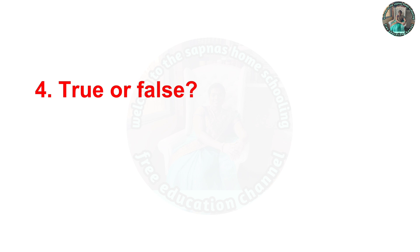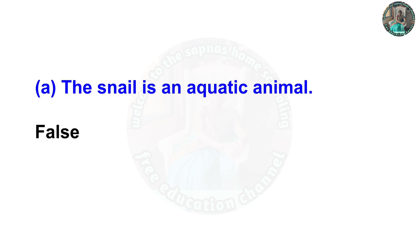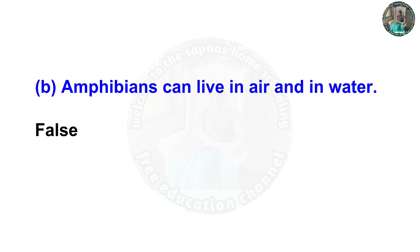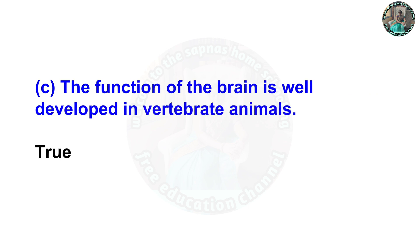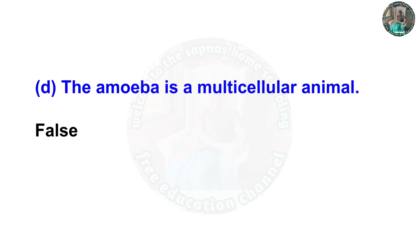Fourth question: true or false? A — the snail is an aquatic animal — false. B — amphibians can live in air and in water — false. C — the function of the brain is well-developed in invertebrate animals — true. D — amoeba is a multicellular animal — false.